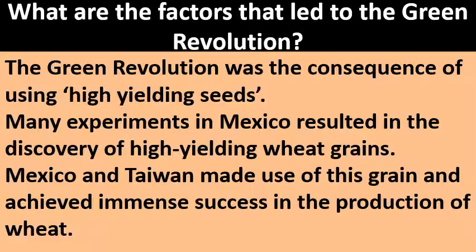What are the factors that led to the Green Revolution? The Green Revolution was the consequence of using high-yielding seeds. Many experiments in Mexico resulted in the discovery of high-yielding wheat grains. Mexico and Taiwan made use of this grain and achieved immense success in wheat production. These factors led to the Green Revolution in India.